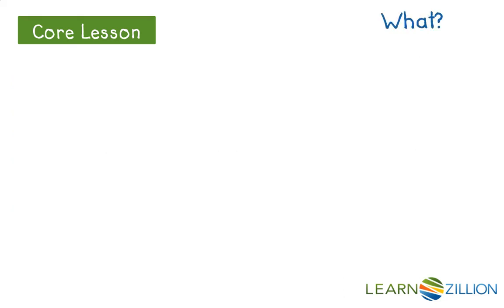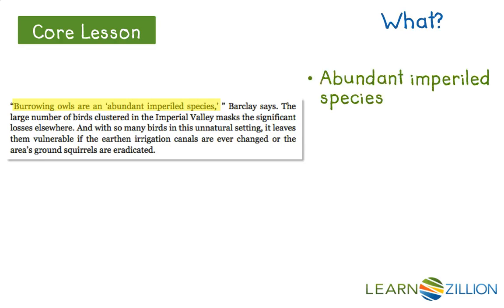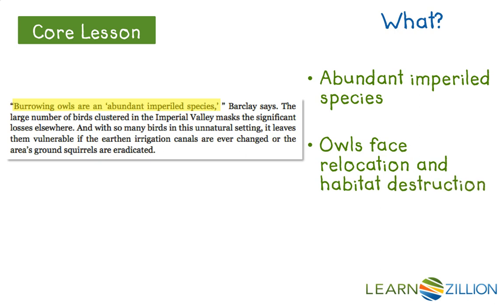Now I'm going to ask what. What is the problem? What can we do? The text says that burrowing owls are an abundant but imperiled species — meaning they're facing relocation and habitat destruction. The problem is that they're imperiled: even though they're still around, they're endangered, and we need to figure out what to do.